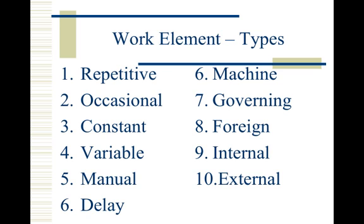Once you've observed the process and broken down the different tasks into work elements, you want to label each element by what type it is. This is important because different types of elements factor into the equation differently.